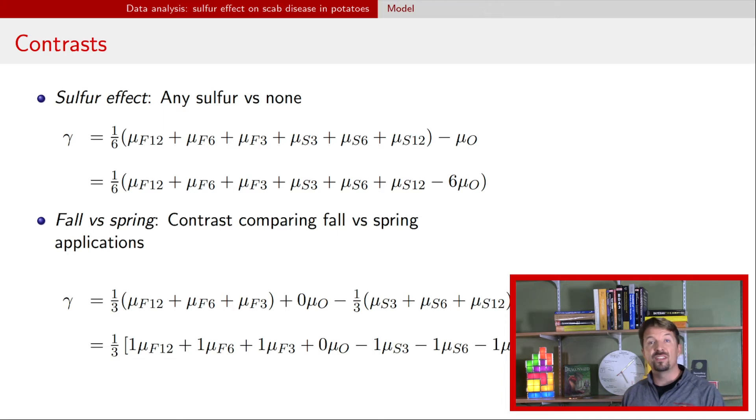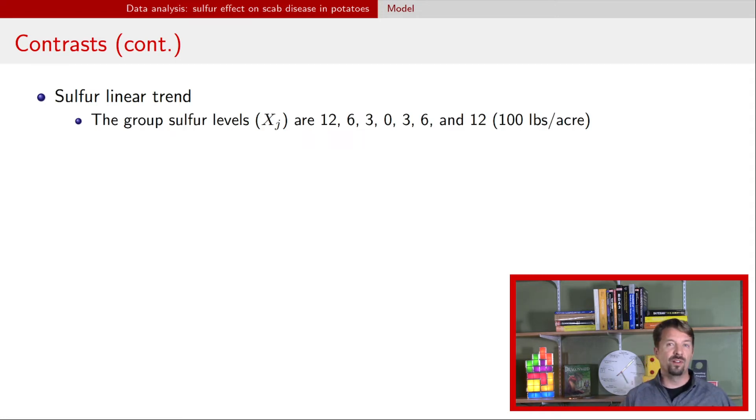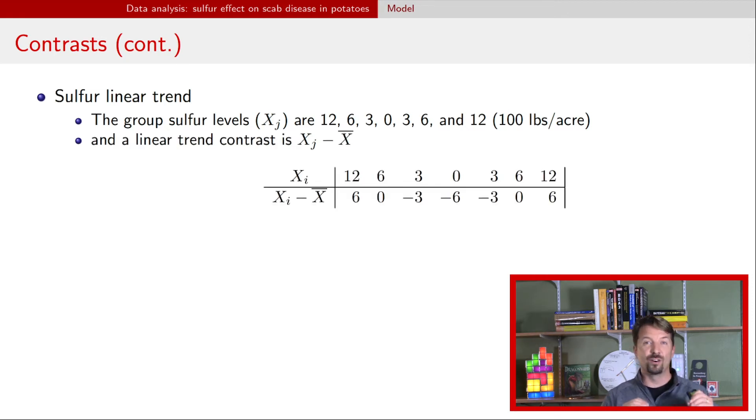So we've gotten a number of the different contrasts here. The last one is talking about the linear trend. The linear trend is a little bit tricky, but if you think about the explanatory variable value that's associated with all these different means, then we have, depending on whether you want to do in pounds per acre or this time a hundred pounds per acre, we have 12, 6, 3, 0, 3, 6, 12. And the way that we construct the linear trend contrast is to take those values for the explanatory variable and subtract their overall mean.